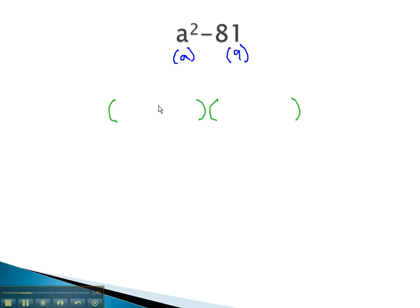A difference of squares will always factor to the sum and difference of the square roots. This means we have a plus 9 and a minus 9. This expression is now factored.